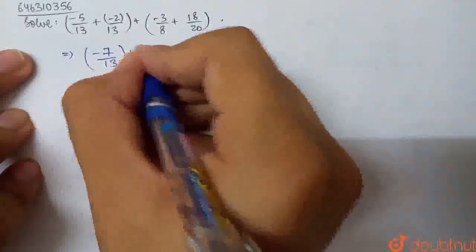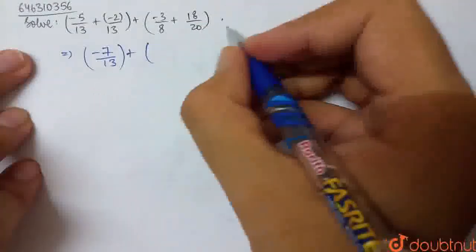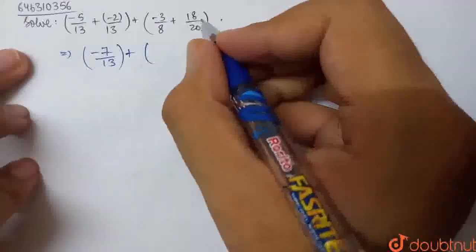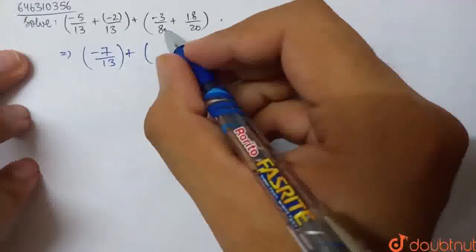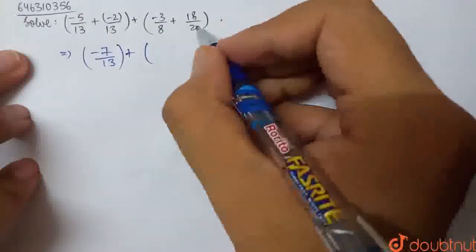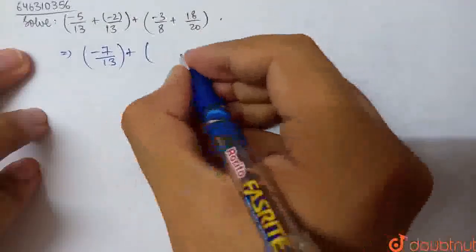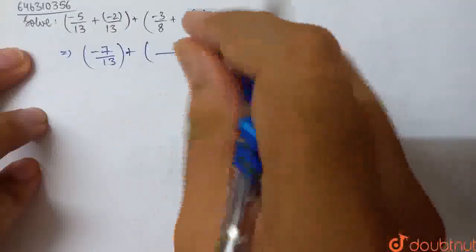So, this is our first bracket, then plus of... How can we make the denominator same here? We can take LCM. This is 5 into 4, this is 4 into 2. So multiply this by 5 and multiply this by 2. We have denominator common as 40.